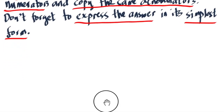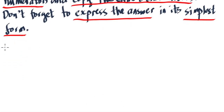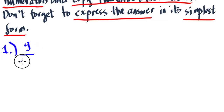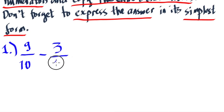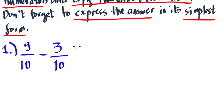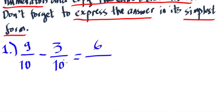For example 1, what we have is 9 over 10 minus 3 over 10. Clearly, they are similar fractions because they have the same denominator, 10 and 10. So, what we will do is subtract the numerators: 9 minus 3 is 6. Copy the denominators, and we're done.